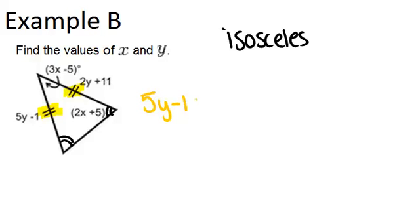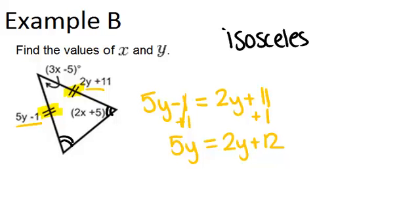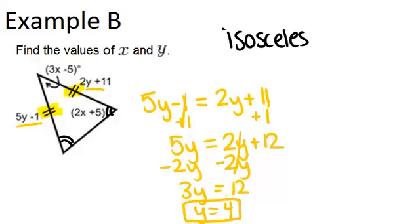5y minus 1 has to equal 2y plus 11, because each of those sides are the same length. So let's solve this equation. I'm going to first add 1 to both sides, and then I have 5y equals 2y plus 12. Next, I'm going to minus 2y from both sides, and then I'll have 3y equals 12, which means that y equals 4. So I have one answer so far, that y equals 4.